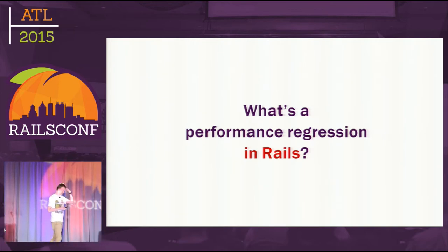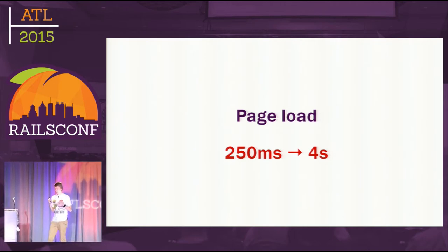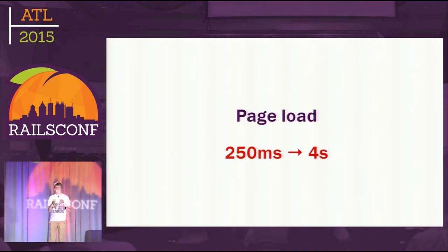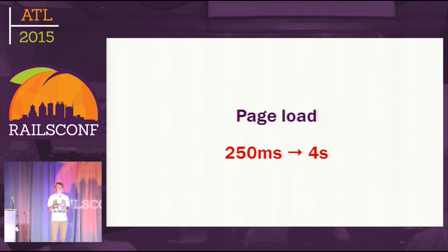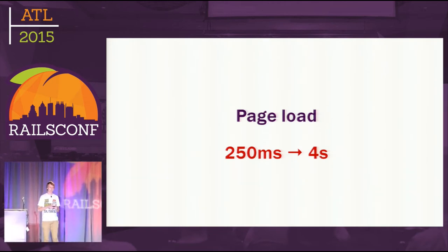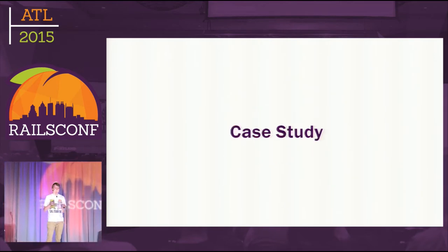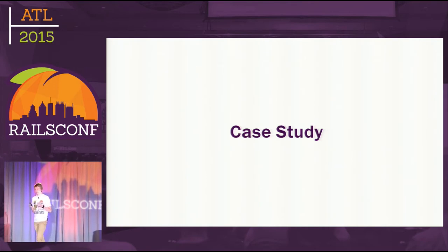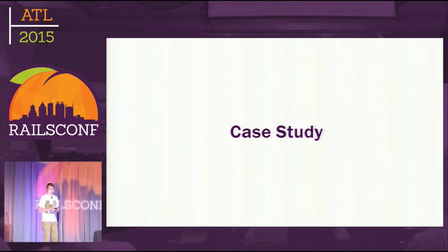What is a performance regression in Rails? Imagine a situation where, after an upgrade to a new version of Rails — fresh, shiny new version — the page load increases from 250 milliseconds to 4 seconds. That's quite huge, right? That's exactly what happened in Rails 3.2.13, because of some bug in Sprockets.